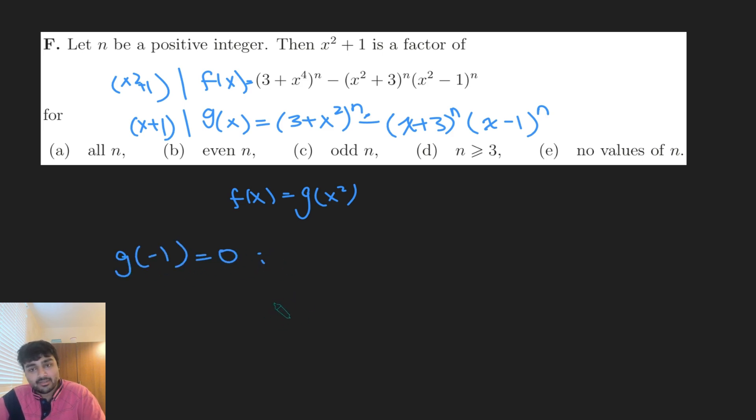And so I get that (3 + (-1)²), so 4ⁿ, minus (3 + (-1)), so 2ⁿ, and then (-1 - 1), which is (-2)ⁿ, should equal 0, just using the factor theorem.